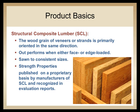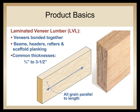SCL members are sawn to consistent sizes, and their properties are found through code reports. Laminated veneer lumber is the most readily available and produced structural composite lumber among the SCL products. It is similar in appearance to plywood. When we look at LVL, we can see that the veneers are laid up side by side with the grain parallel to the length for every veneer thickness.